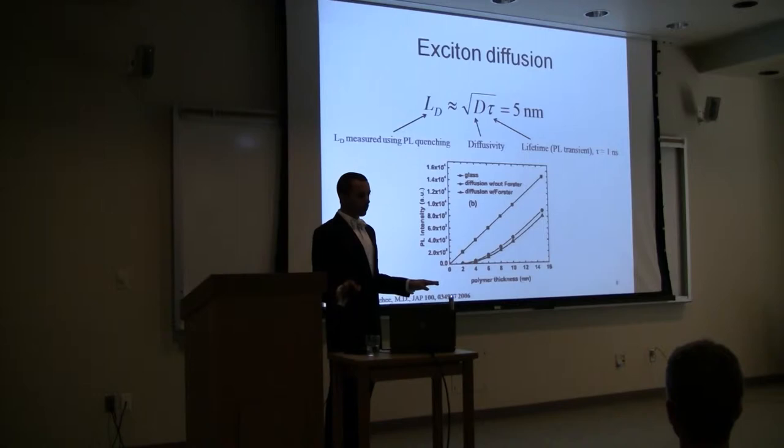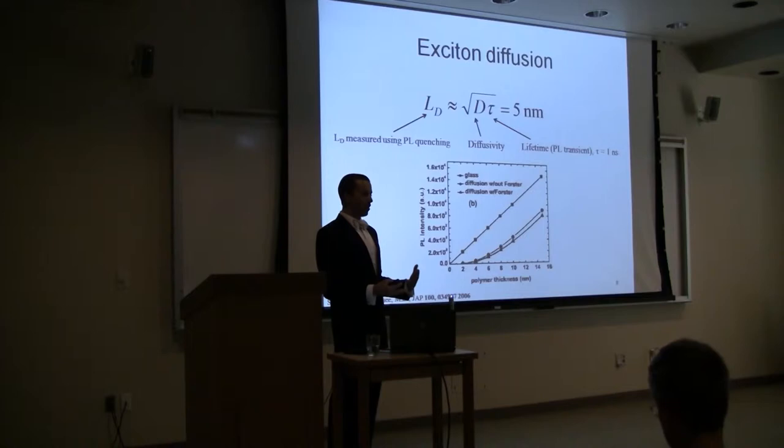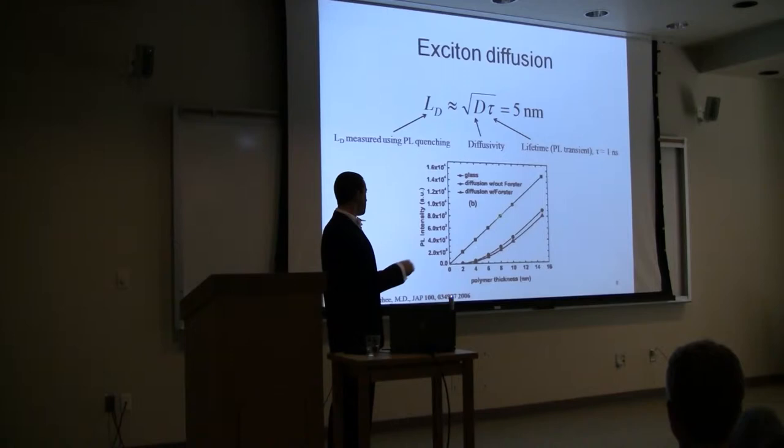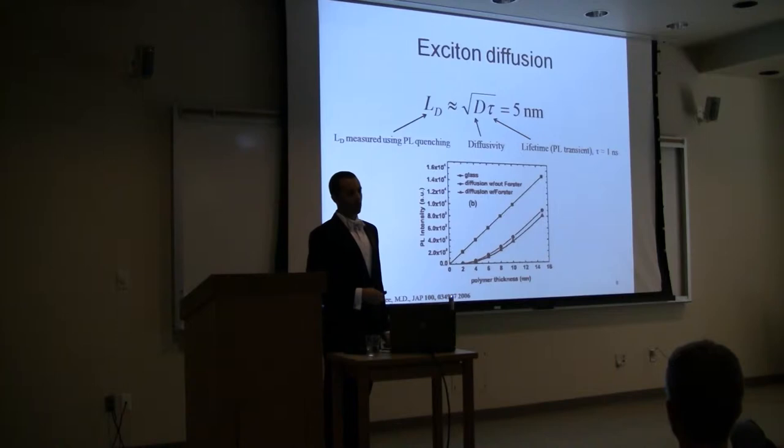The idea is we shine light on the material, we form excitons everywhere. Some of those excitons will diffuse to the interface with the quencher and if that quencher can accept electrons in the excitons, then the excitons will split there and they won't emit light. Versus if you put it on glass, those excitons can't transfer electrons to glass and they will always emit. By changing the thickness of that film on top, we can compare the emission from both cases and with some math and modeling back out what the exciton diffusion length is.